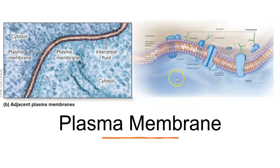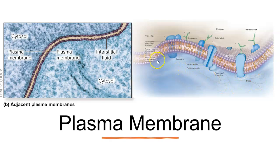In the image, the blue area is inside the cell and the tan color up here is outside the cell. Inside the cell we have the cytosol, which is the intracellular fluid. Outside of the cell we have the interstitial fluid, which we call tissue fluid — the extracellular fluid. Intra means within; extra means outside of.